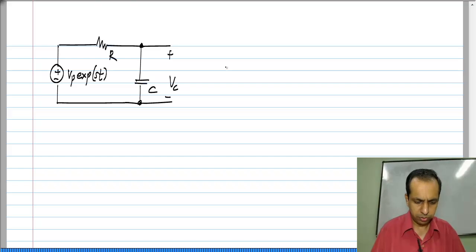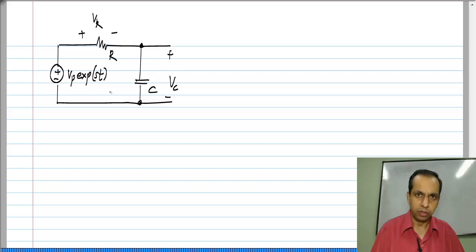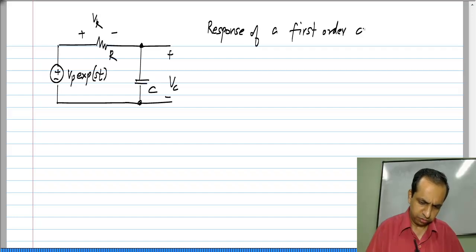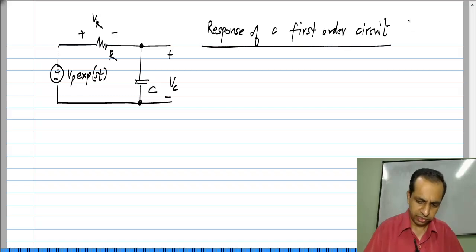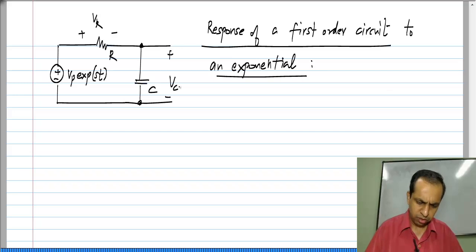Let us say we are looking for the response of V_C. This could be anything else — we could be looking for the response of V_R or the current through the loop. We know that the response of a first order circuit, of which this RC circuit is an example, can be expressed in terms of forced and natural components.